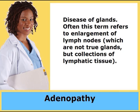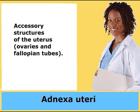Adenopathy: Disease of glands. Often this term refers to enlargement of lymph nodes, which are not true glands, but collections of lymphatic tissue. Adnexa uteri: Accessory structures of the uterus — ovaries and fallopian tubes.